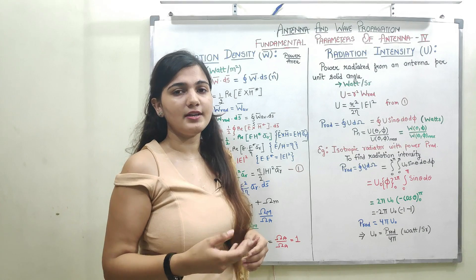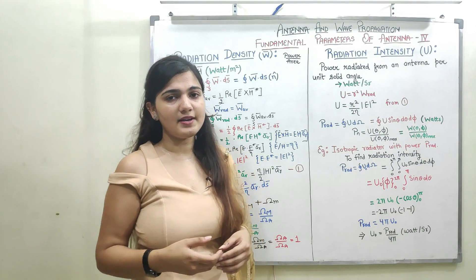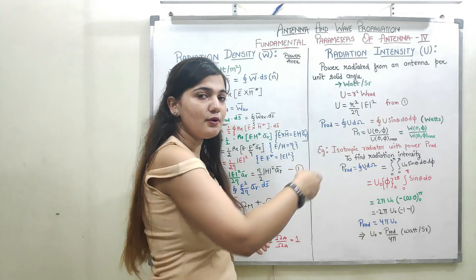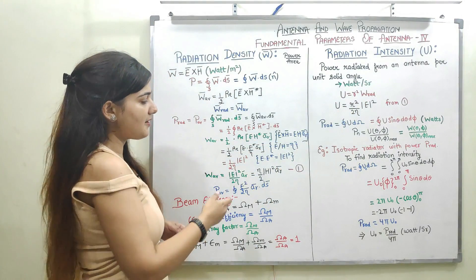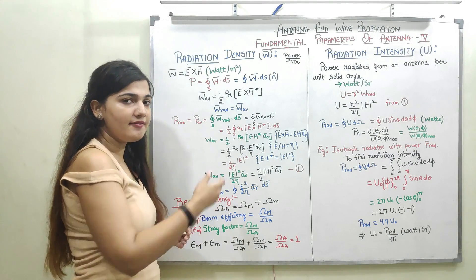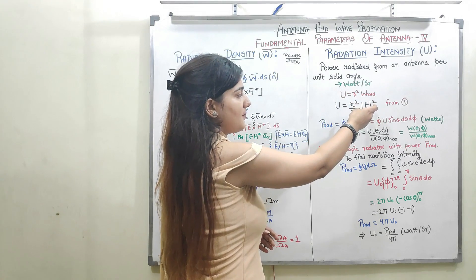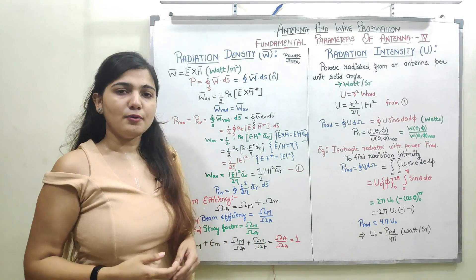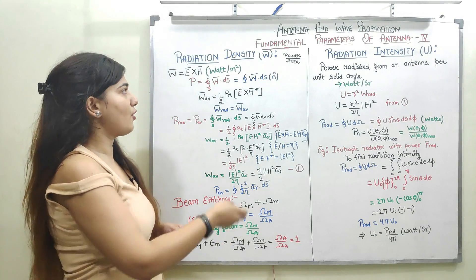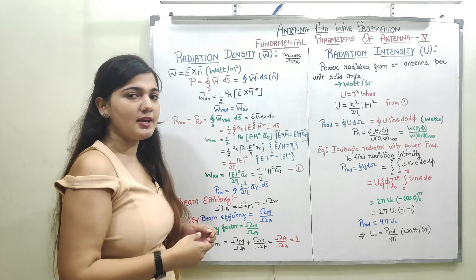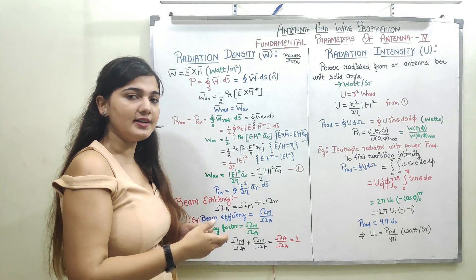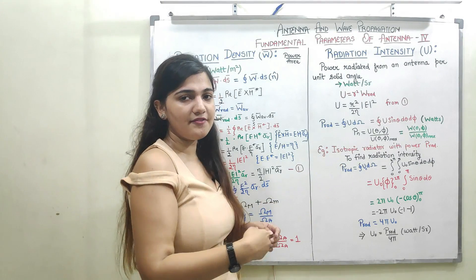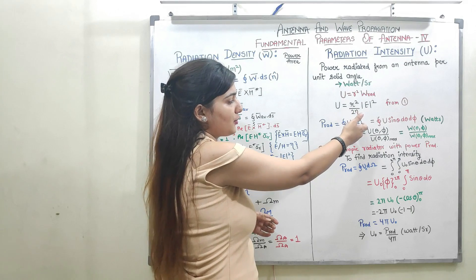Now we will see the mathematical equation of radiation intensity. Radiation intensity is independent of R² — that is, independent of distance from the antenna. We can represent radiation intensity U as R² times average power density. Since average power density equals |E|² / 2η, radiation intensity becomes R² / 2η · |E|². Total instantaneous power for radiation density is found by integrating average power density over the entire surface, whereas total radiated power for radiation intensity is found by integrating U over the total beam area, where beam area is sin θ dθ dφ.